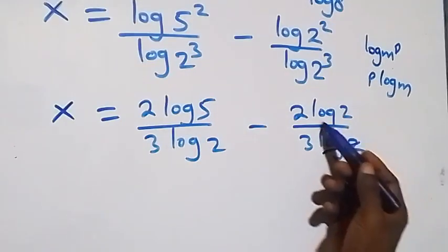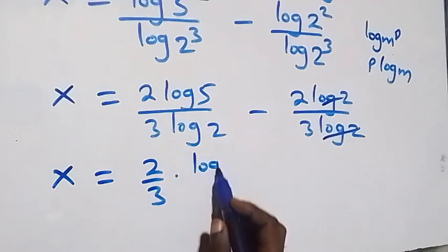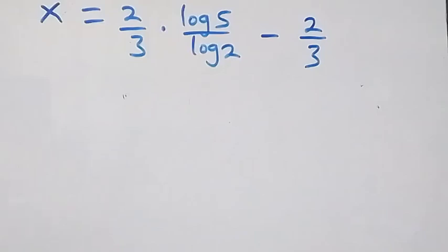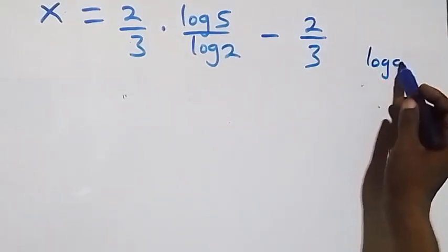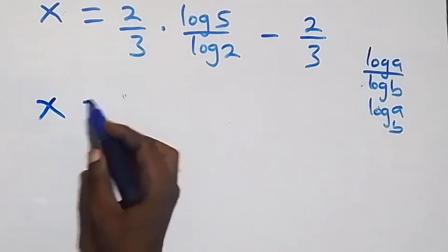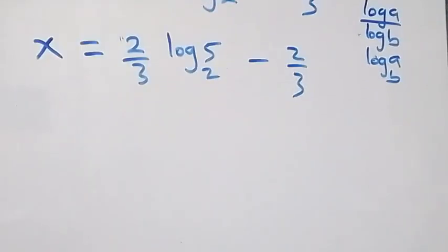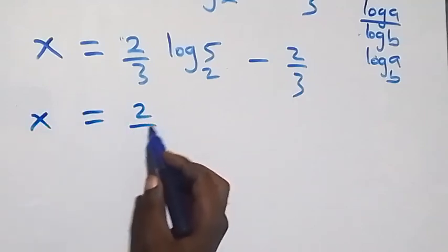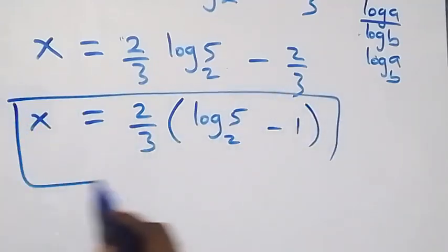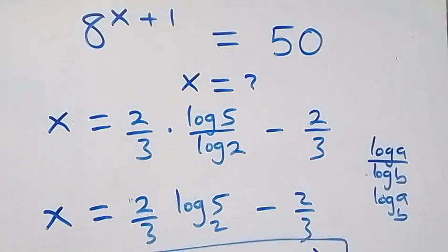This gives x equals 2 over 3 times log 5 over log 2, minus 2 over 3. We factor out 2 over 3, and apply the change of base formula — log a over log b equals log a to base b — giving x equals 2 over 3 into bracket log 5 base 2 minus 1.